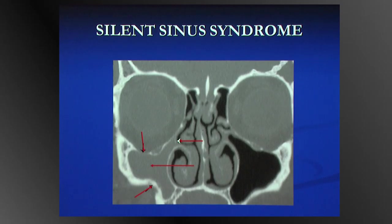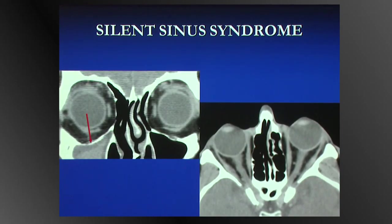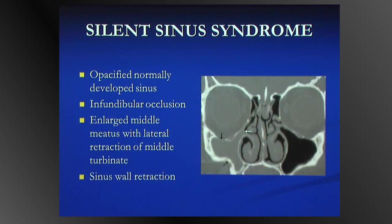The differentiating feature from hypoplasia: in silent sinus syndrome, the alveolus is normally developed and the sinus is normally developed — this developed as a result of sinus disease rather than hypoplasia. In hypoplasia, the alveolus is underdeveloped and thick because the sinus has never expanded into it. On imaging, you see a subtly opacified sinus with the uncinate lateralised, and the key finding is the increased cranial-caudal distance of the orbit caused by sinus wall retraction.